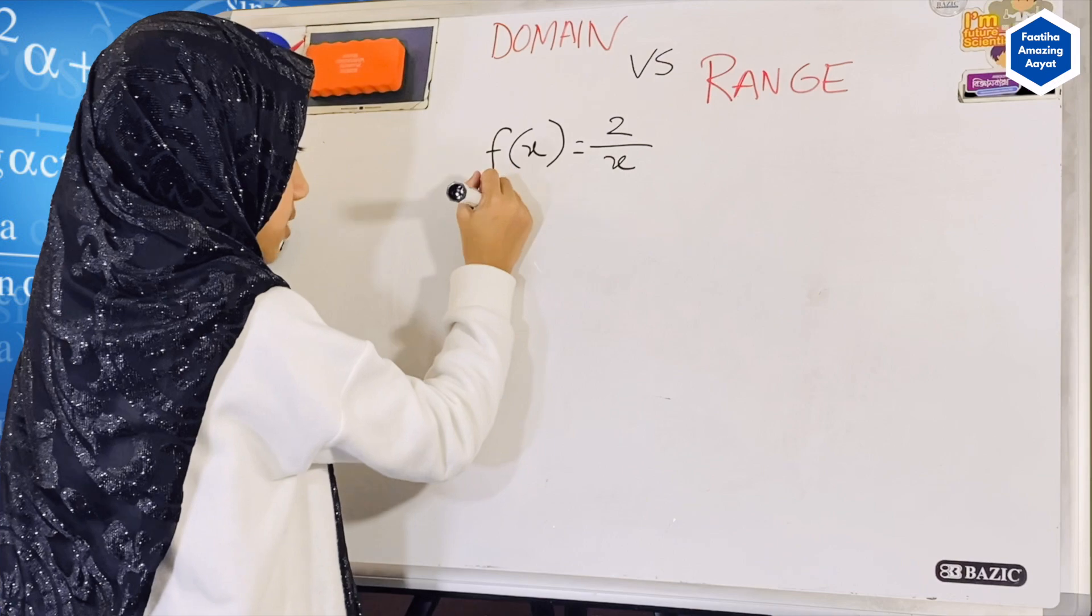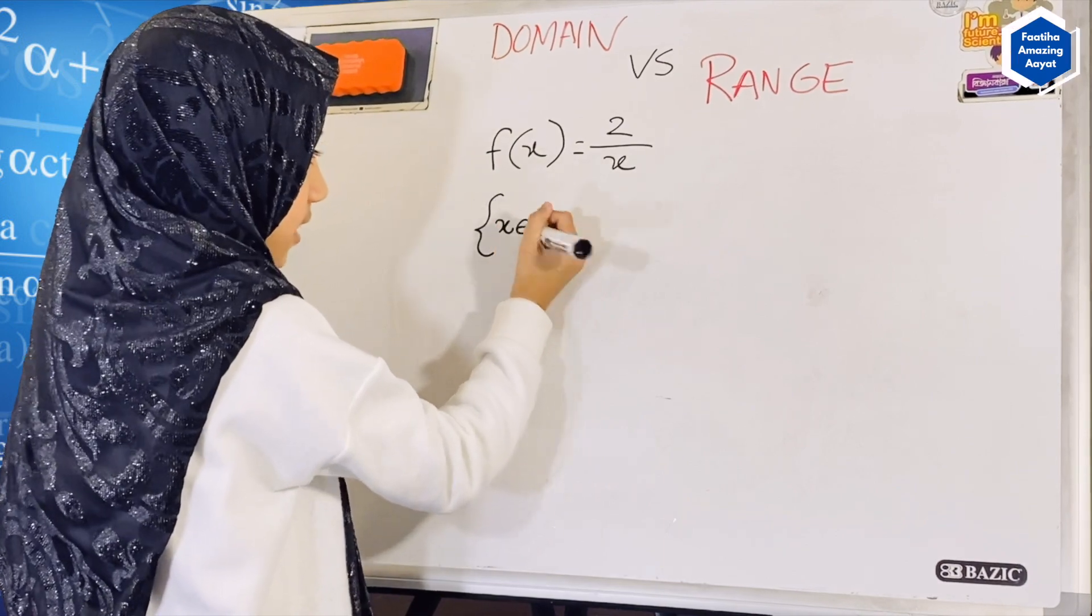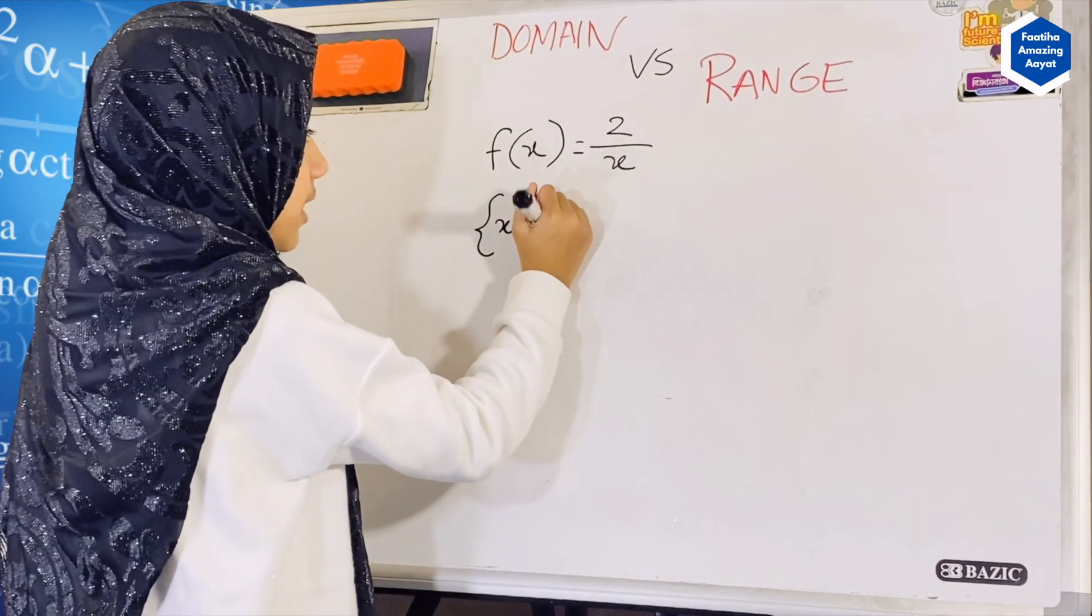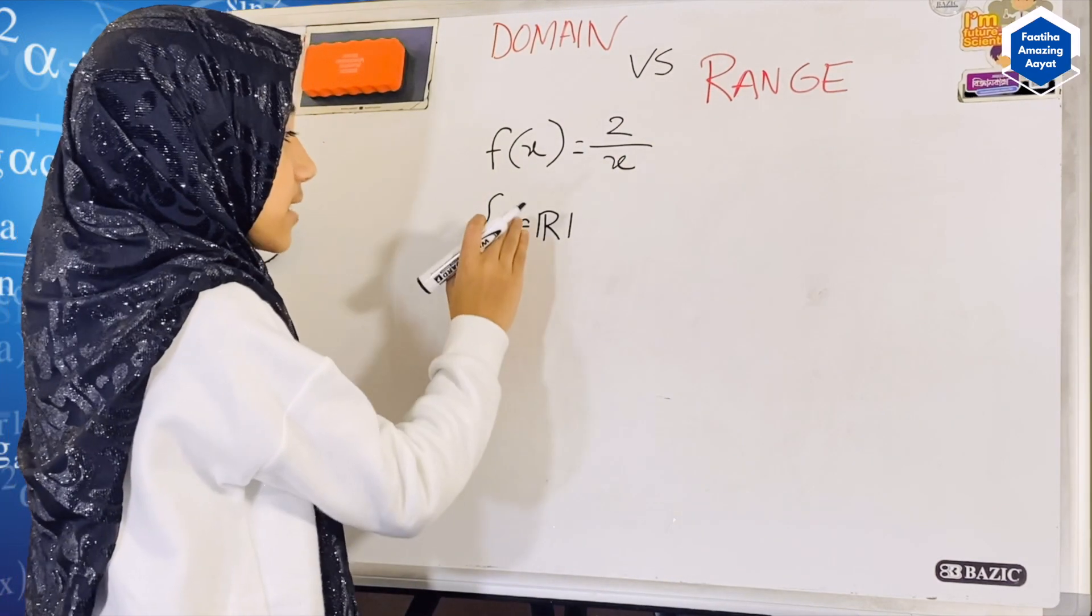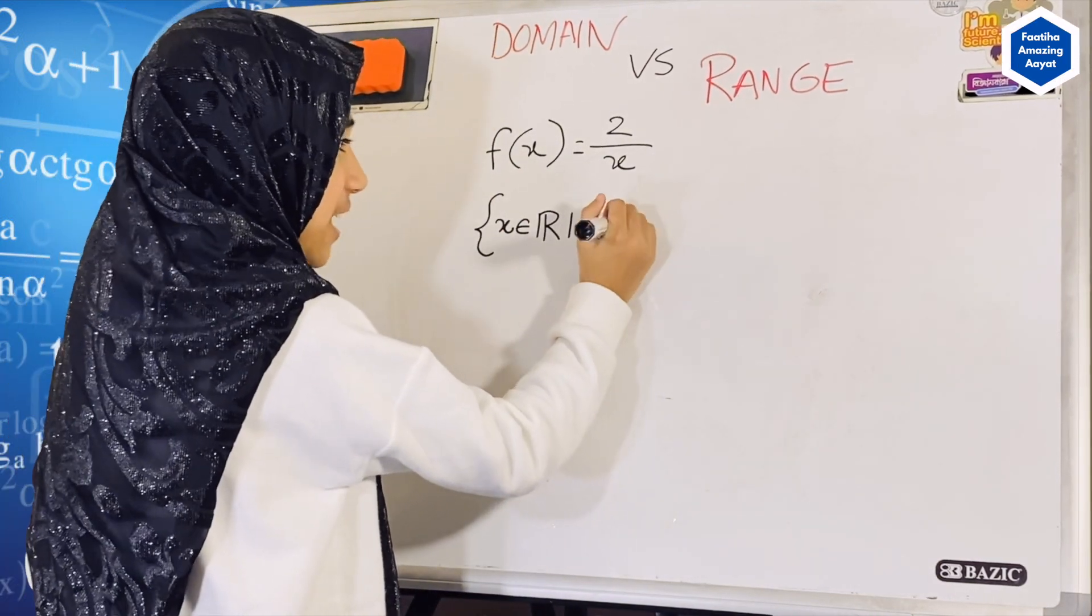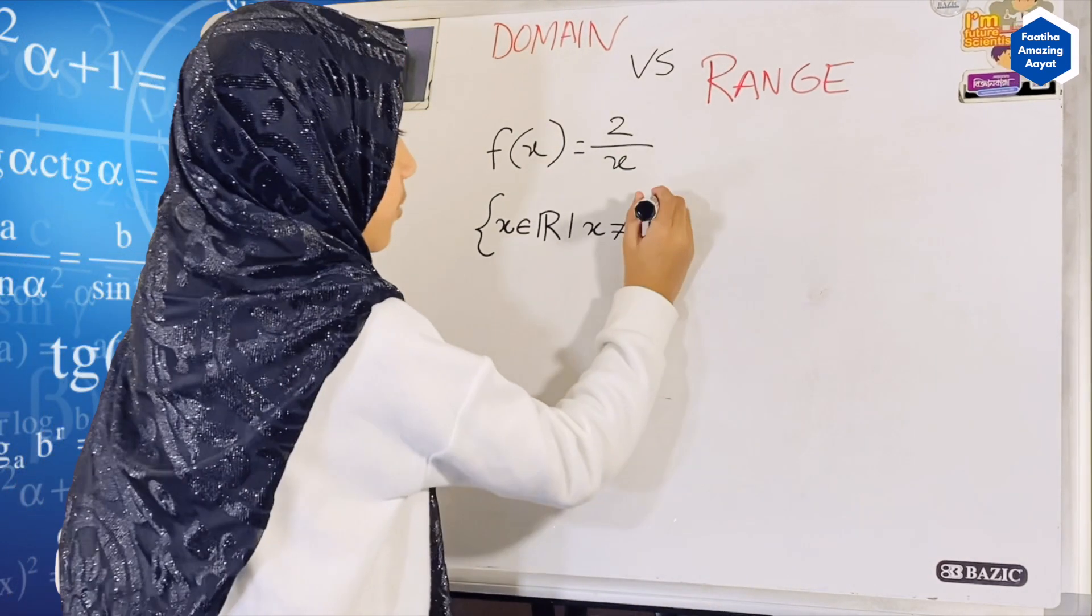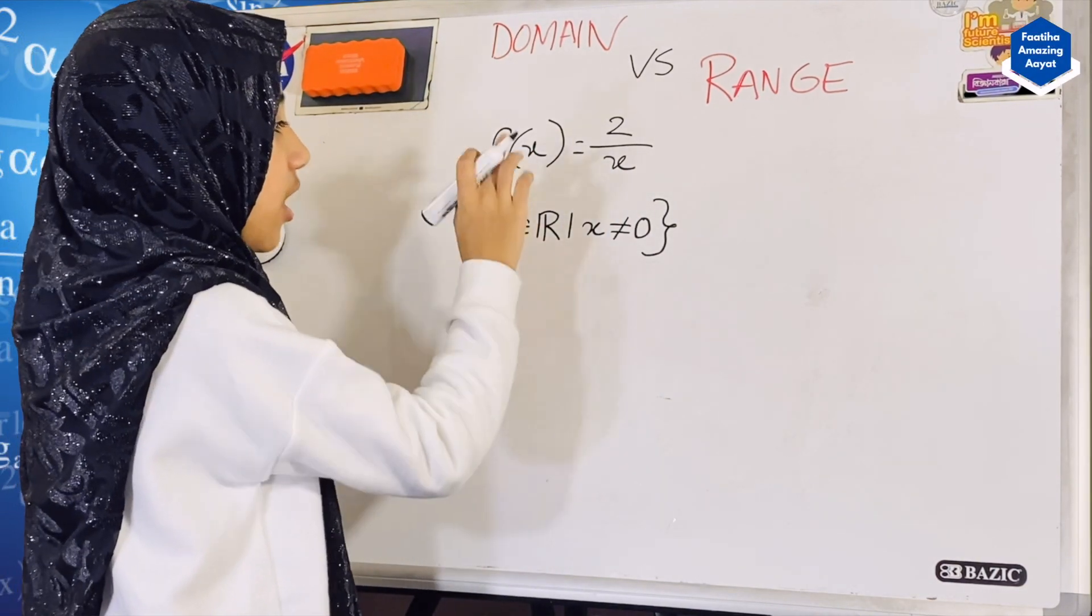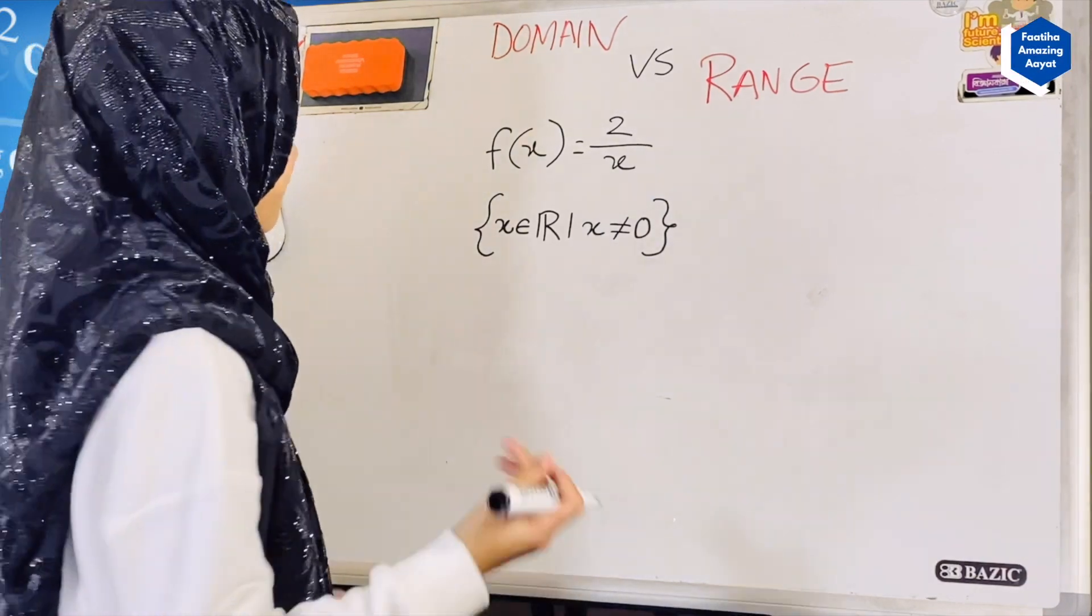So, here, let's write that. We go to this bracket and we write that x. X is epsilon. Epsilon is a Greek letter and it actually represents that x is a member. And this line right here, this straight line is actually such that. So, let's say in a sentence. X is a member of all the real numbers such that. Now, we said that our x can be everything but not equals to 0. It can't be 0 but it can be any other real number. And we'll close. This is how we would write this function. So, x is a member of real numbers such that x is not equals to 0 but x can be anything else.